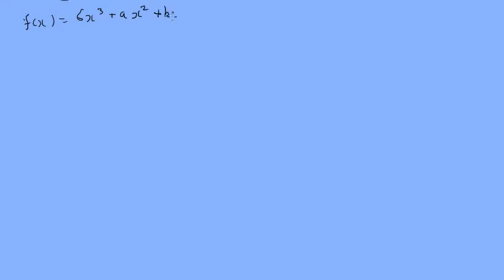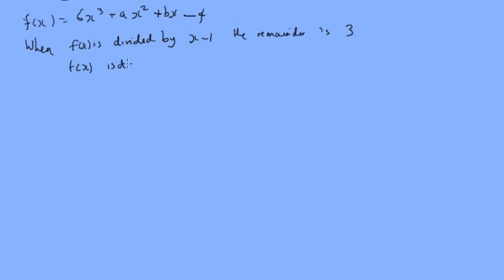So f of x is 6x cubed plus ax squared plus bx minus 4. When f of x is divided by x minus 1, the remainder is 3. And when f of x is divided by 3x plus 2, the remainder is minus 2. So we want to find a and b.